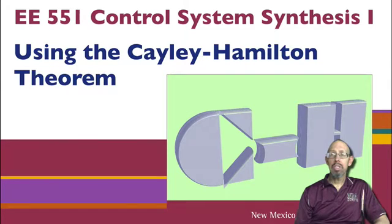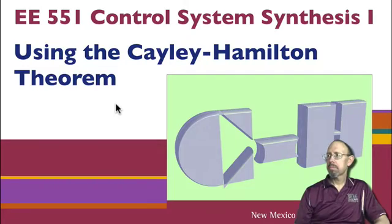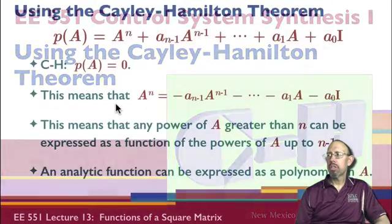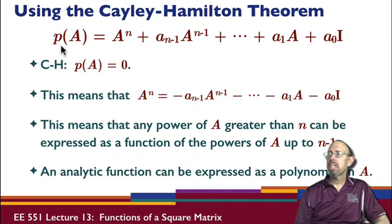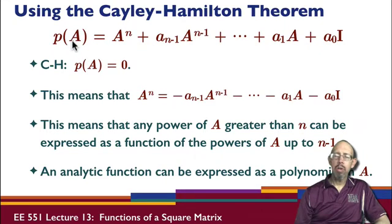A third way to compute functions of a square matrix is using the Cayley-Hamilton theorem. The Cayley-Hamilton theorem says to look at the characteristic polynomial and substitute A for the value s. This is what the characteristic polynomial looks like when you substitute A for s.